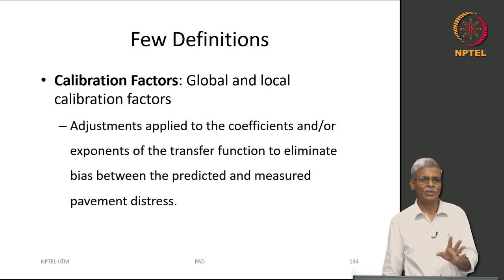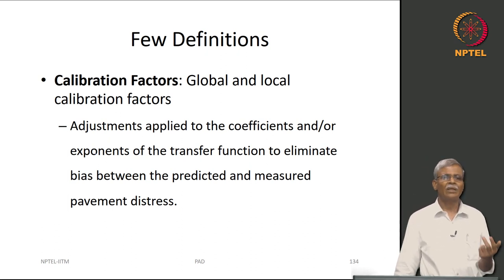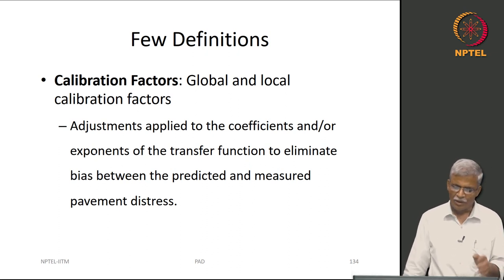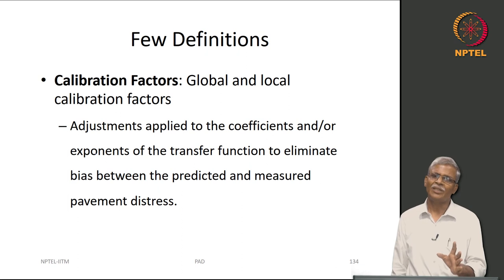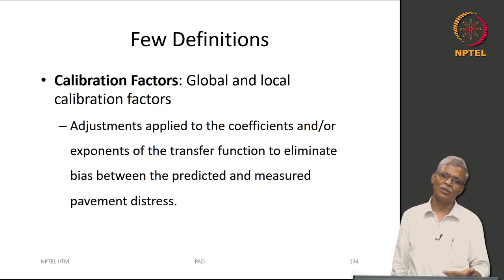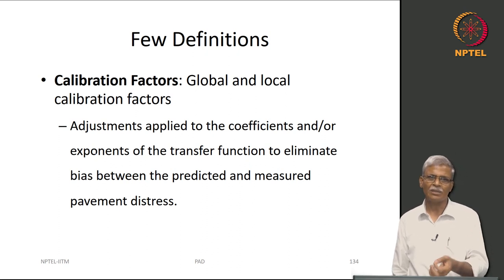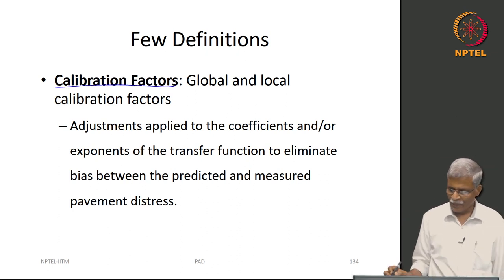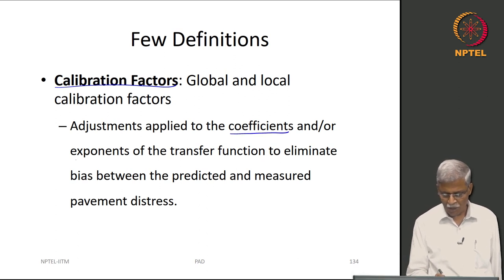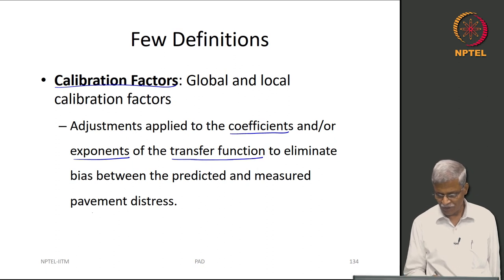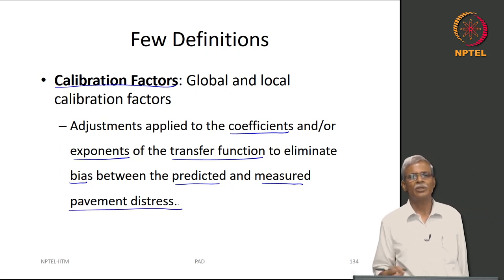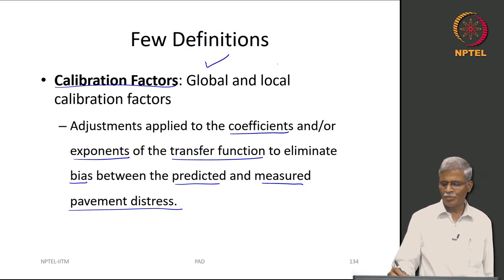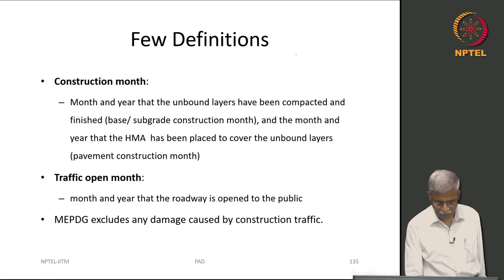Let me introduce key definitions for this lecture. A calibration factor is an adjustment applied to the coefficients or exponents of the transfer function to eliminate bias between predicted and measured pavement distress. These calibration factors can be global or local.